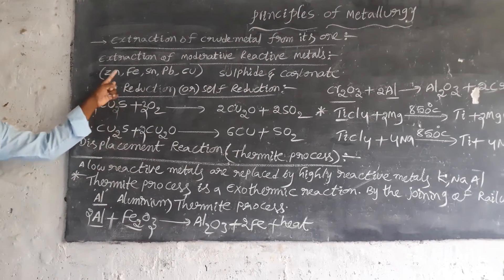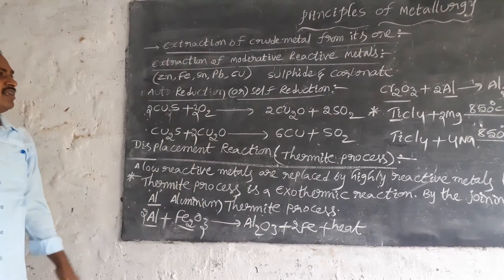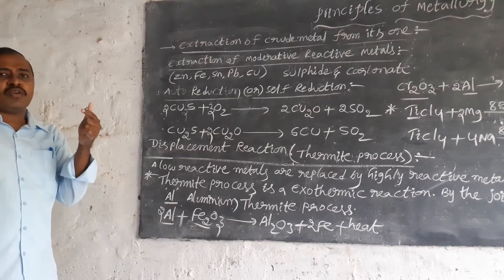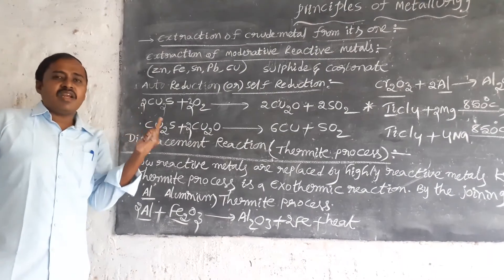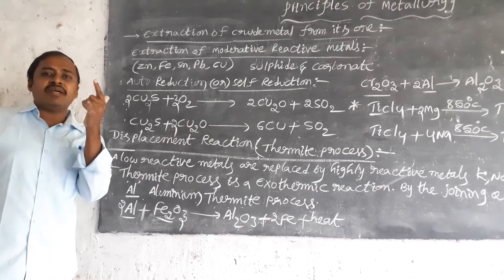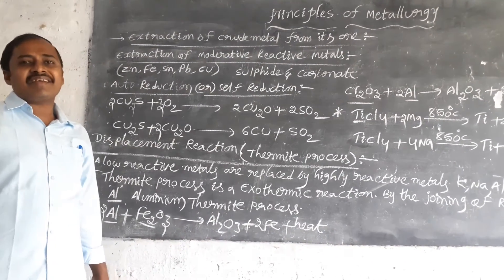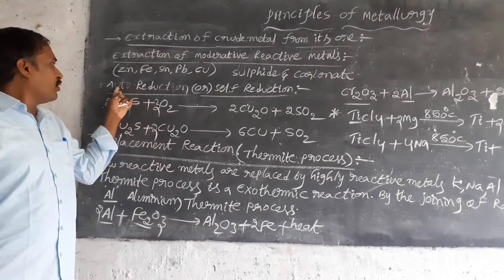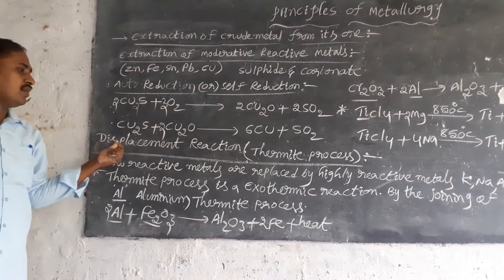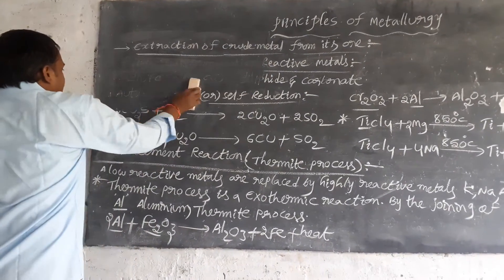This covers the extraction of moderately reactive metals. The steps are: roasting, then calcination — where sulfide ores and carbonate ores are converted to oxide ores. Then reduction with carbon or carbon monoxide, then auto reduction or self reduction, and finally the displacement reaction or thermite process.